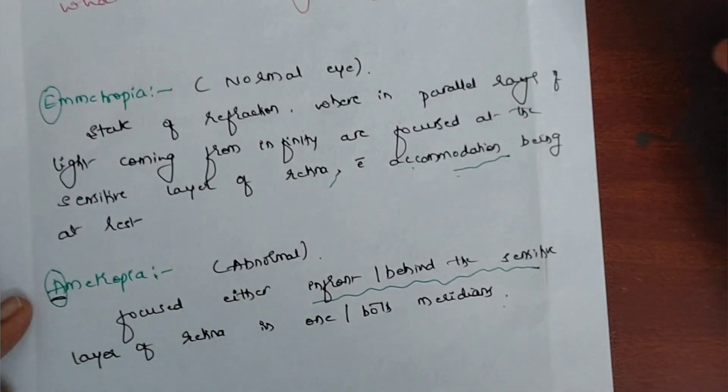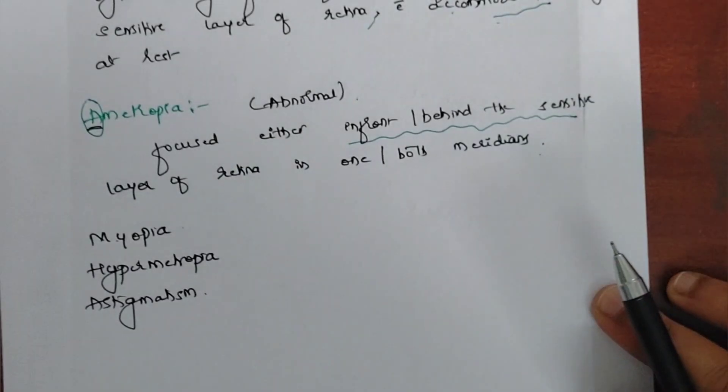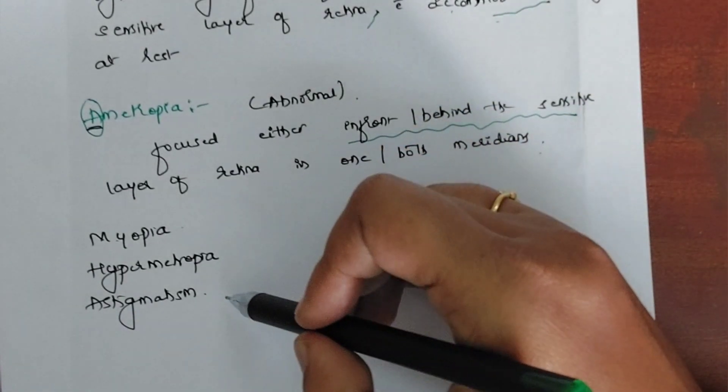So what are the types of ametropia, that is what are the types of abnormal refraction? We have myopia, hypermetropia, and astigmatism.